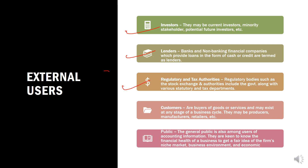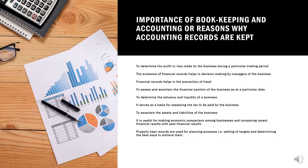We have regulatory or tax authorities — government bodies that need this information. We also have customers — those who buy your goods may need to know your financial strength. For example, if they pay upfront and you cannot deliver, they are in trouble, so they need your financial information. Then there is the general public and financial analysts, who also need this information.